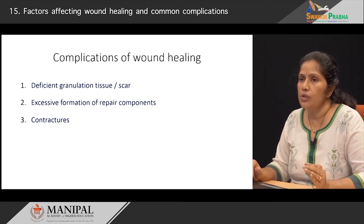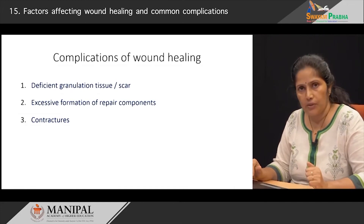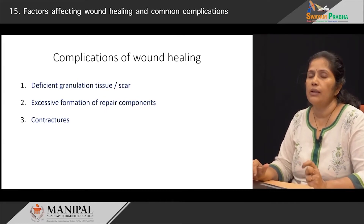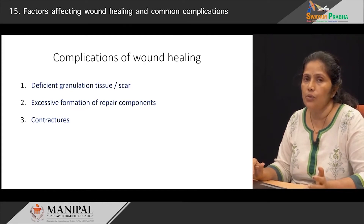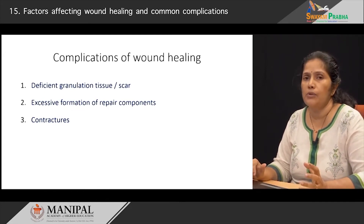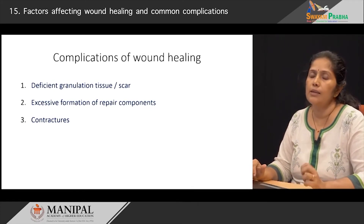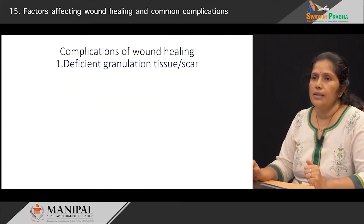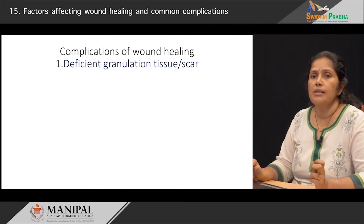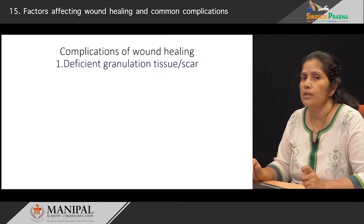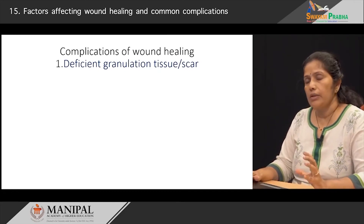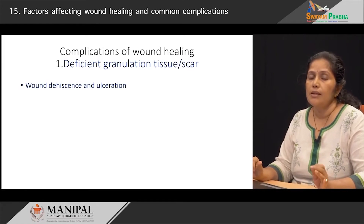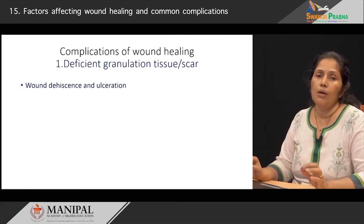The first category is when there is a deficient granulation tissue or a deficient scar tissue formation. The second category of complications arises when there is excessive formation of the repair components — that is, the components which take part in the formation of granulation tissue. The third is when the patients develop contractures. If a patient does not have adequate formation of granulation tissue or scar formation, what it can result in is known as wound dehiscence or ulceration.